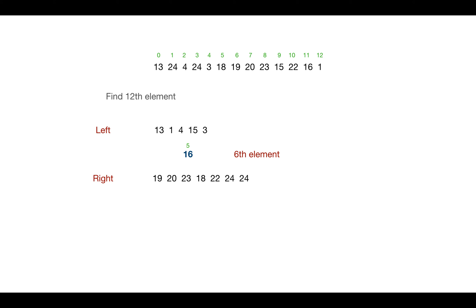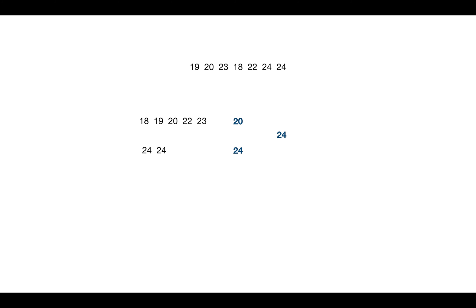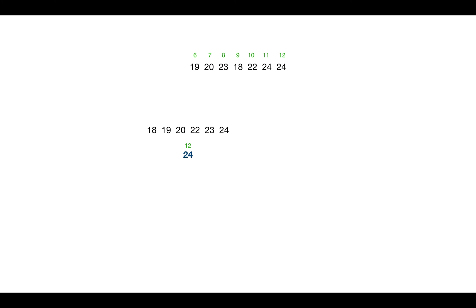We take the right subarray and again divide it into chunks of five elements, sort each, and find the median of each, then the median of those two medians. Using 24 as the pivot, one iteration places 24 at index 12. The index we need is 11, so we look at both subarrays. This time there are no elements to the right of index 12, so we take the left subarray to find the median.